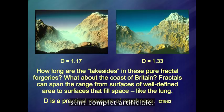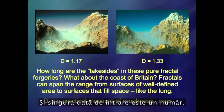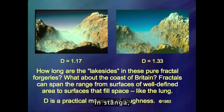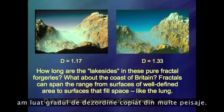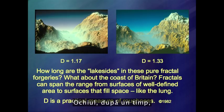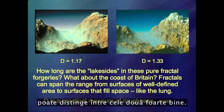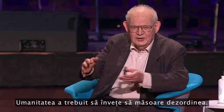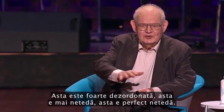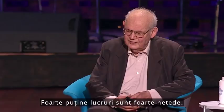These surfaces are completely artificial — done on a computer — and the only input is a number, and that number is roughness. On the left, I took the roughness copied from many landscapes; to the right, I took higher roughness. So the eye, after a while, can distinguish these two very well. Humanity had to learn about measuring roughness. This is very rough, and this is sort of smooth, and this is perfectly smooth. Very few things are very smooth.